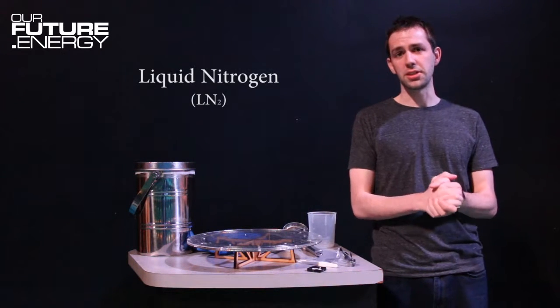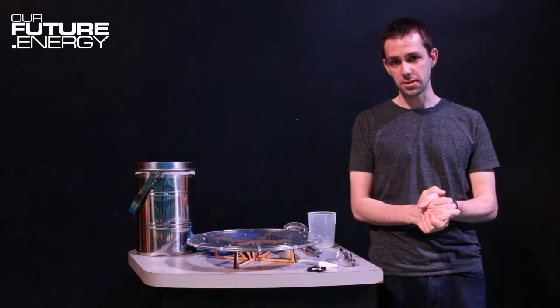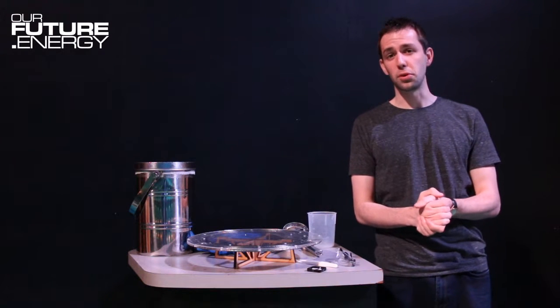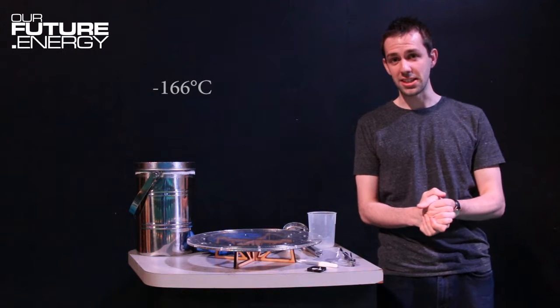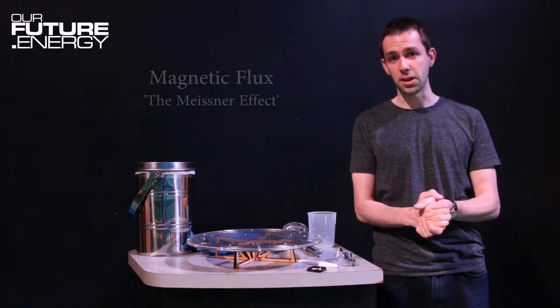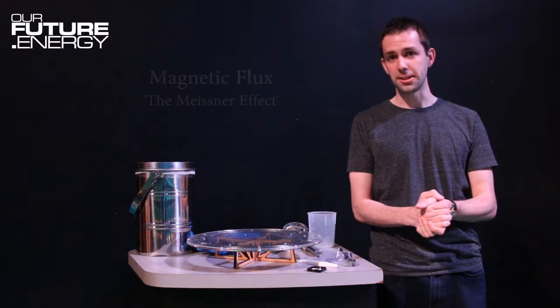Now a superconductor is material that allows electrons to flow through it without any resistance, and when you cool it down to temperatures below minus 166 degrees Celsius it produces something called magnetic flux, also known as the Meissner effect.